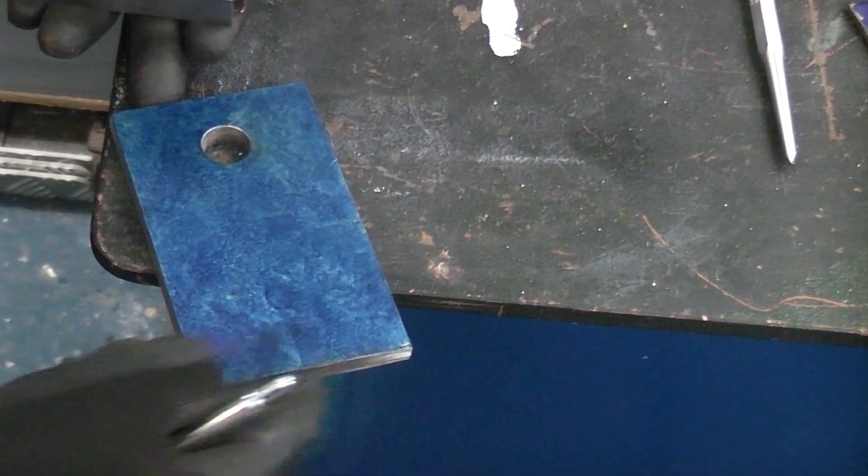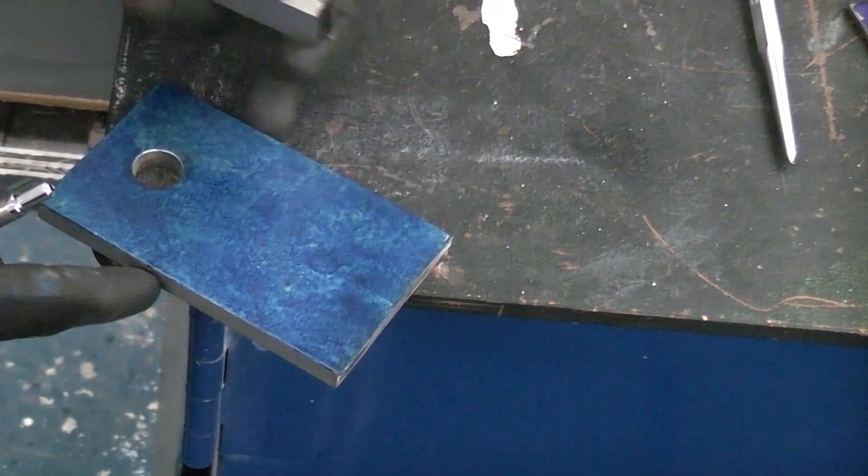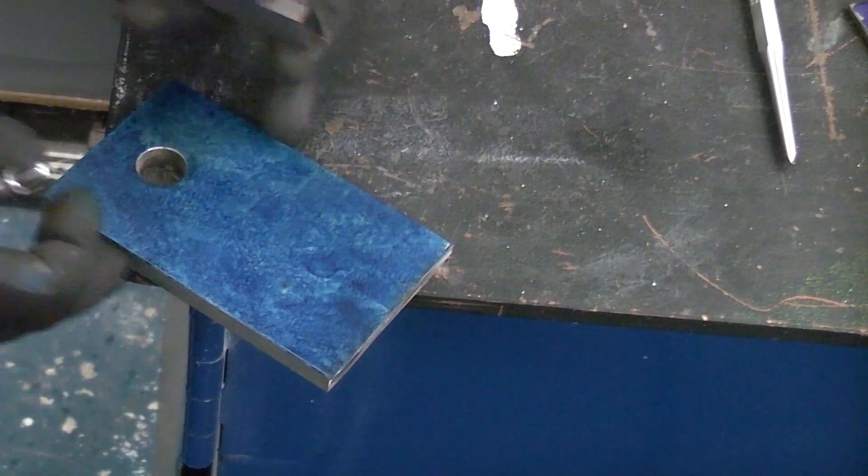So you could not mark out from that edge. You always need a good edge such as this edge or this edge to mark out from because they are completely flat and completely straight.